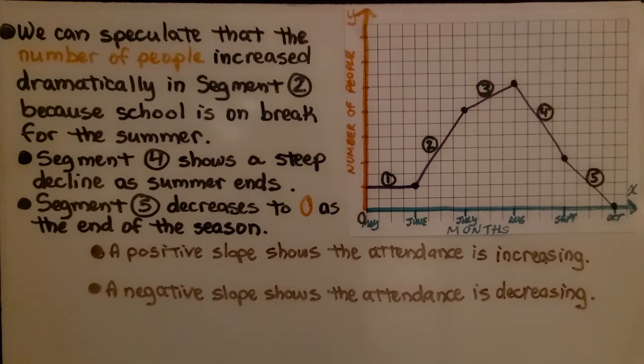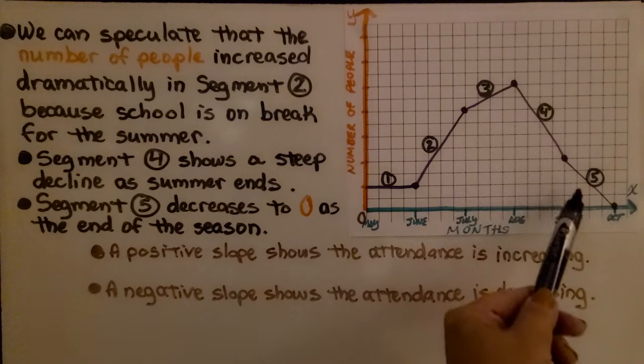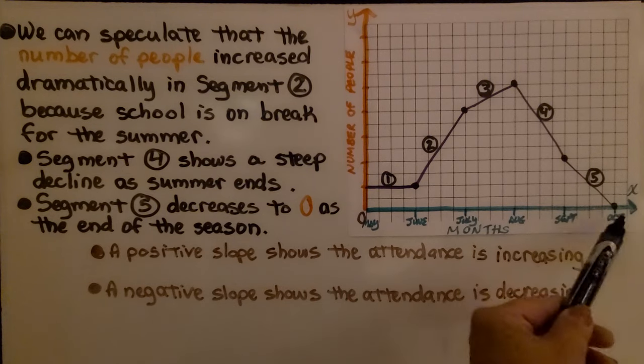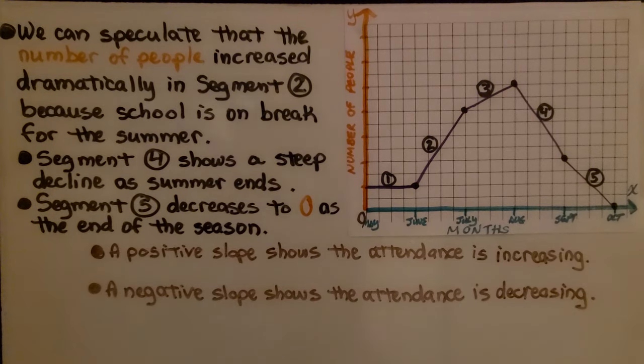We can speculate that the number of people increased dramatically in Segment 2 because school is on break for the summer, from June to July. And Segment 4 shows a steep decline as it's approaching September and summer is ending. And Segment 5 decreases to zero as it is the end of the season when the pool is going to close.